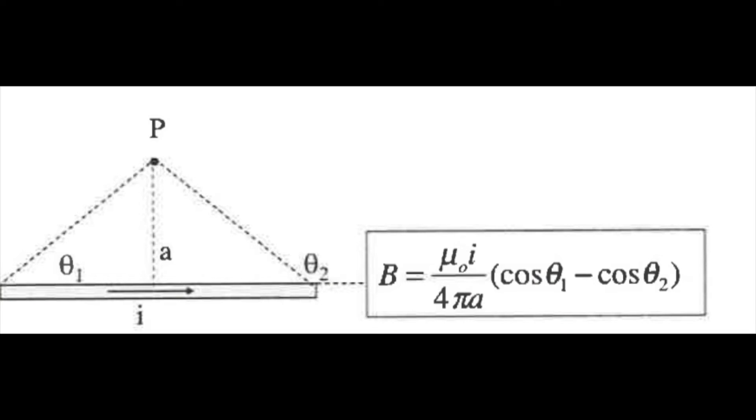The magnetic field of various geometries from a thin straight conductor of finite length is μ₀i / (4πa) times (cosθ₁ − cosθ₂). That's it.